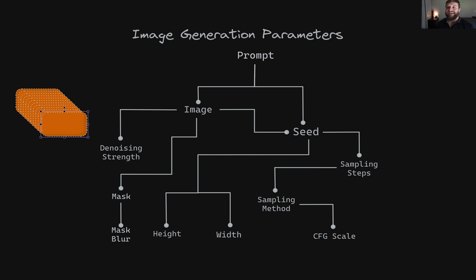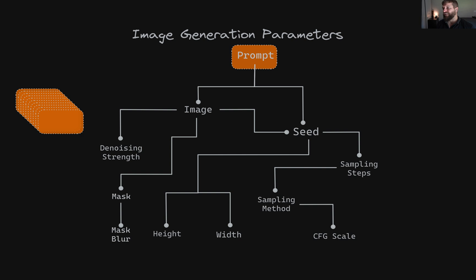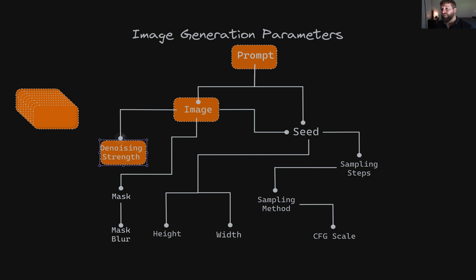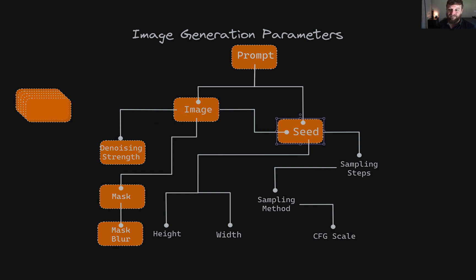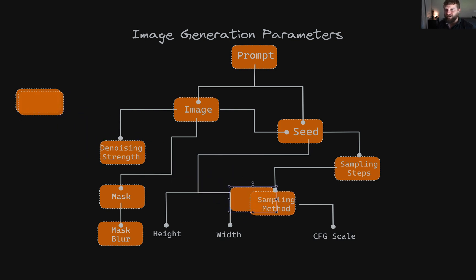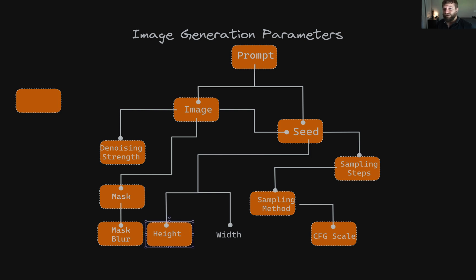Technically, we'll gain a full understanding of all of the following image generation parameters: we will see how prompts work and spend quite a bit of time doing prompt engineering — this is where we learn about text to image. Then we will move on to image to image, and learn about the input image parameter, the denoising strength, masks and mask blur values. Then we will turn our attention to seeds, sampling steps, sampling methods, and the CFG scale along with the height and width values. By the end of the course, all of these parameters will be intricately fused in your mind.